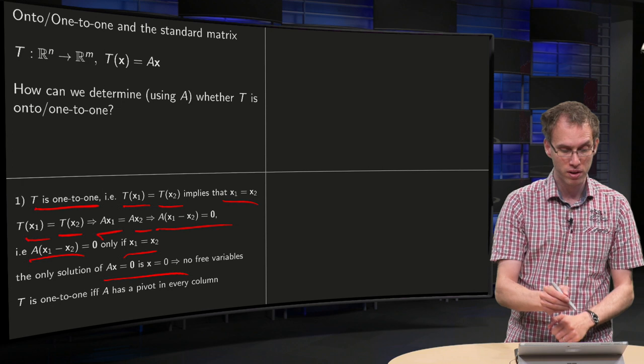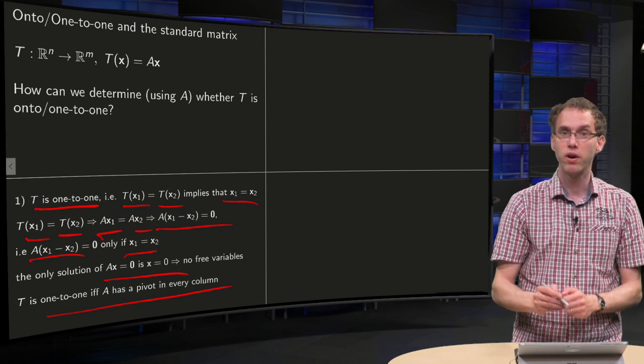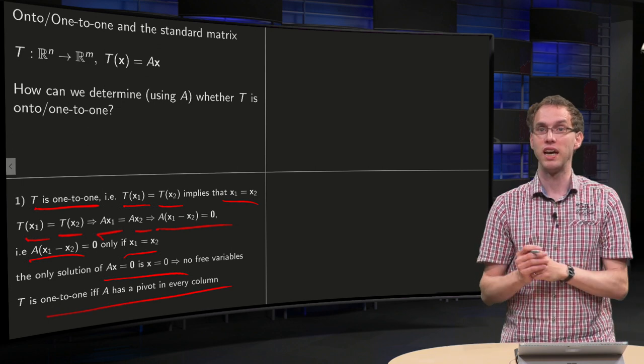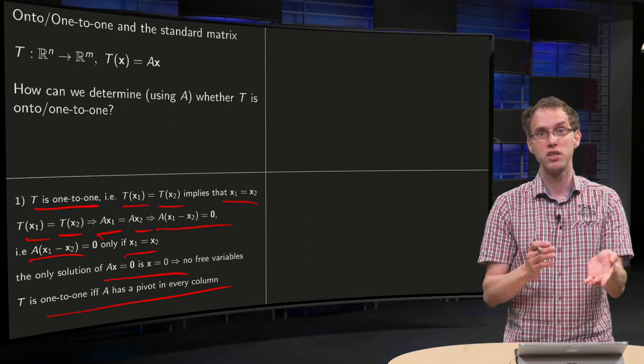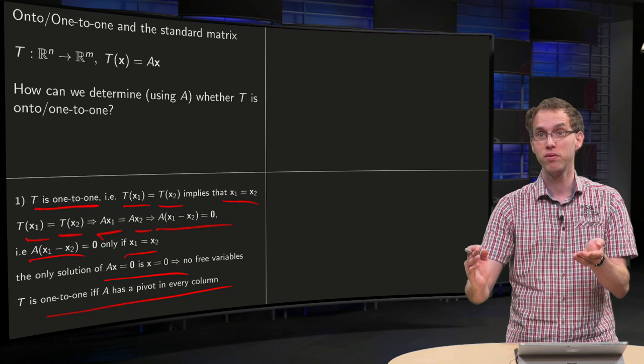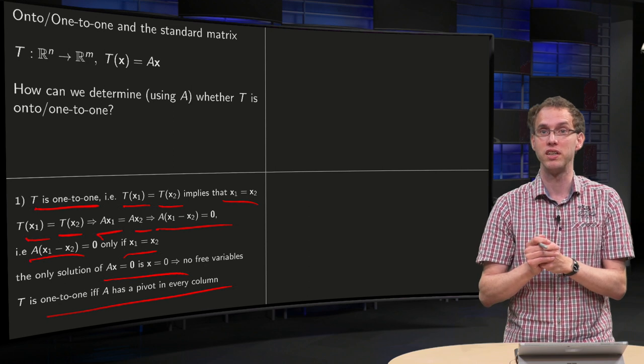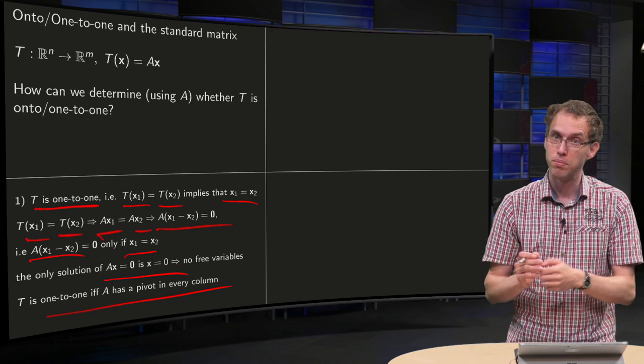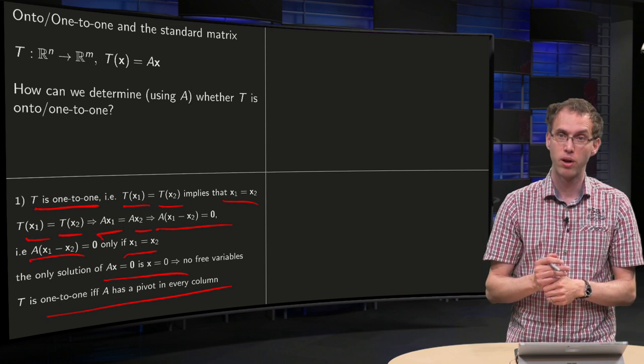Now you see that from the pivots. Well, that means that every column of your matrix A needs to have a pivot. So your transformation T is one-to-one if and only if the corresponding standard matrix A has a pivot in every column.